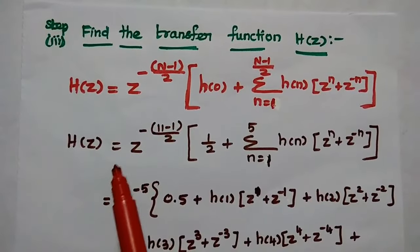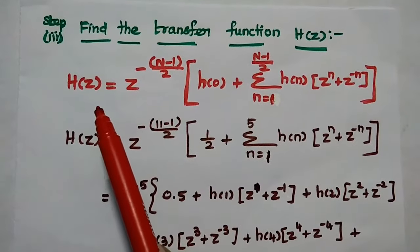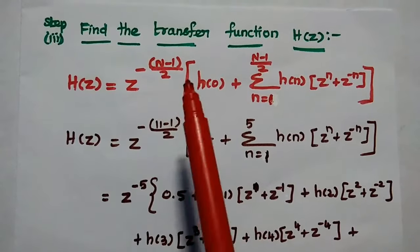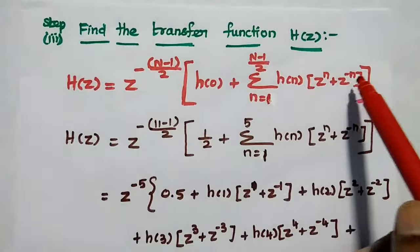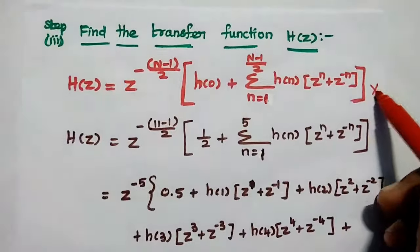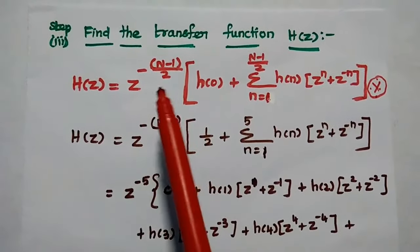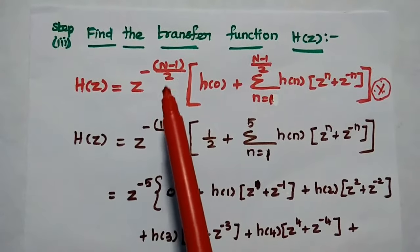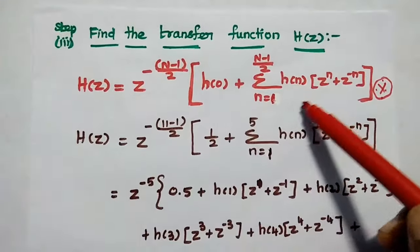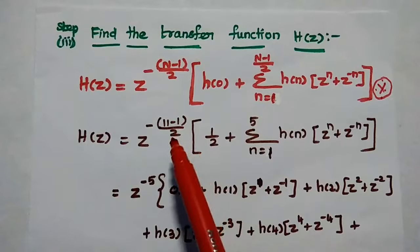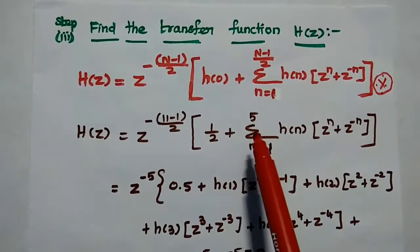The last step is to find the transfer function H(z) for the given FIR filter, using the formula: H(z) = z^(-(N-1)/2) × [h(0) + Σ_{n=1}^{(N-1)/2} h(n) × (z^n + z^(-n))]. Substituting N = 11, we get z^(-5) × [h(0) + Σ_{n=1}^{5} h(n)(z^n + z^(-n))]. Now we expand this summation.